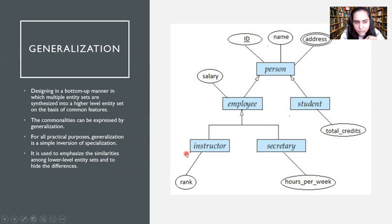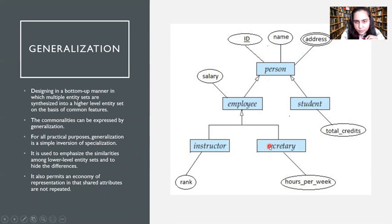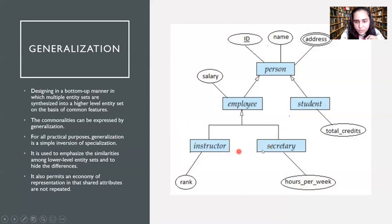Generalization also permits an economy of representation in that shared attributes are not repeated. Generalization begins from the bottom — you have a university and you decide there are three kinds of people: instructors, secretaries, and students. So you create three entity sets. Instructor contains attributes like ID, name, address, salary, and rank.